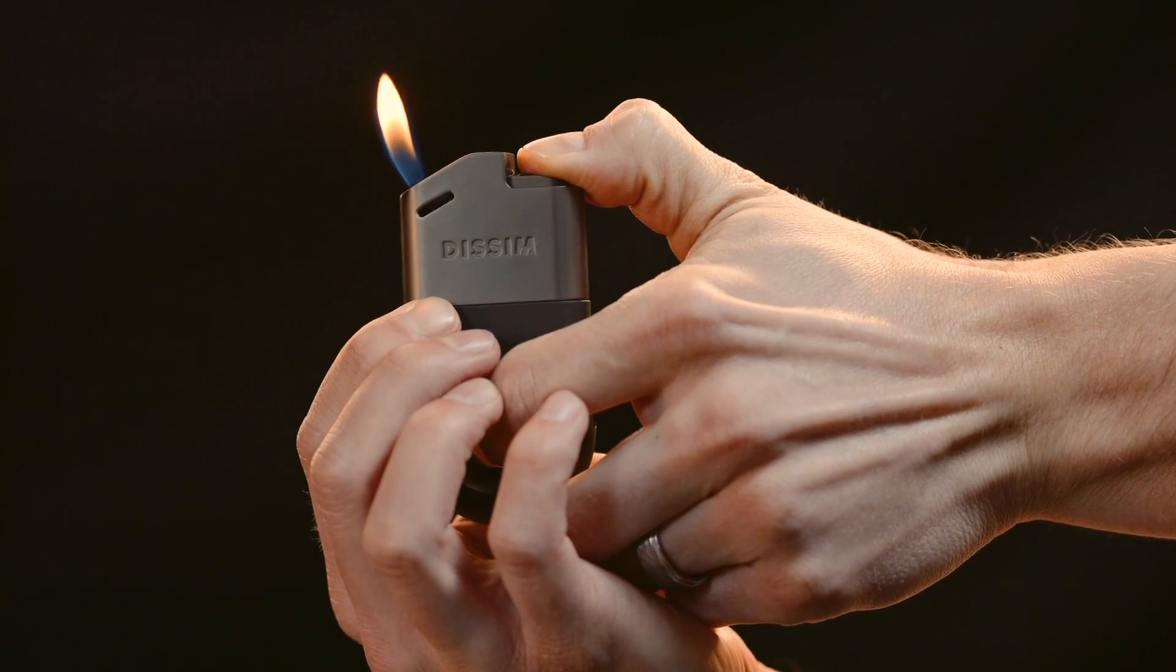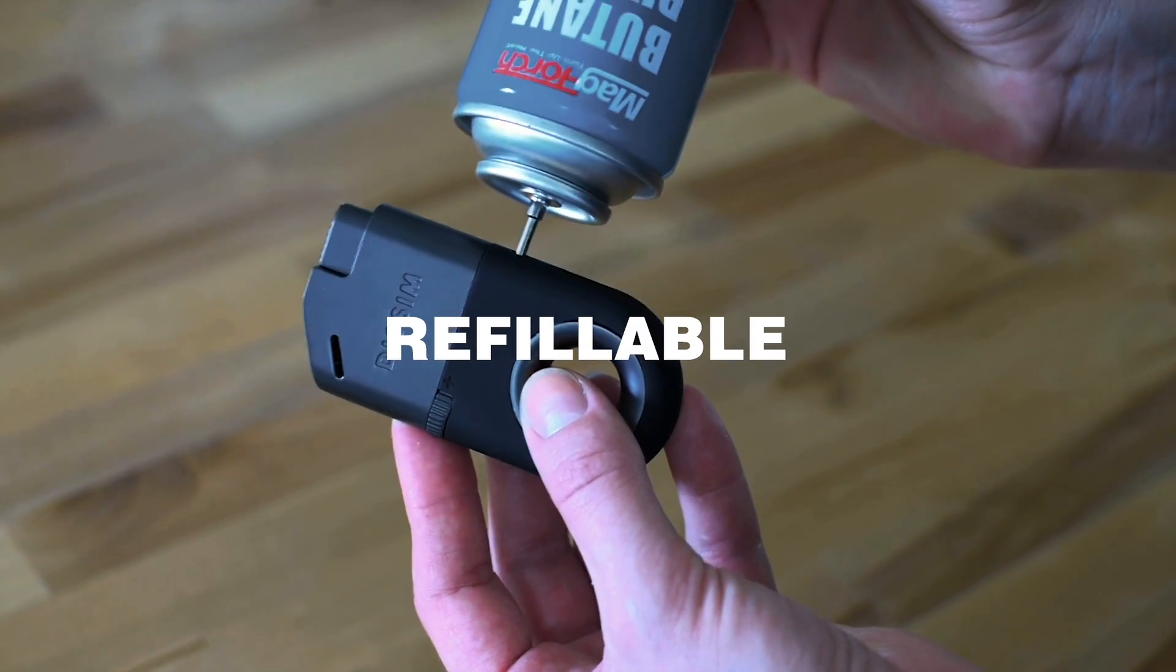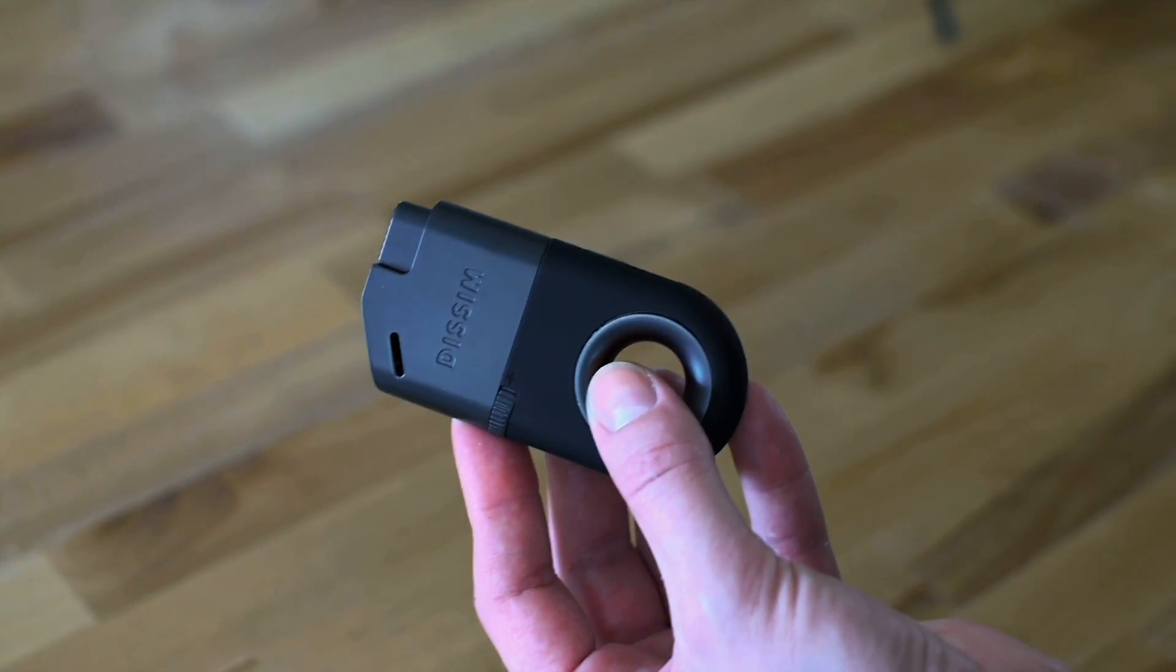The flame adjustment wheel makes it easy to set the perfect flame height. The refillable butane tank makes sure you'll never have to throw another lighter in a landfill.